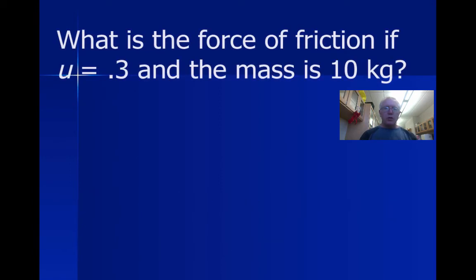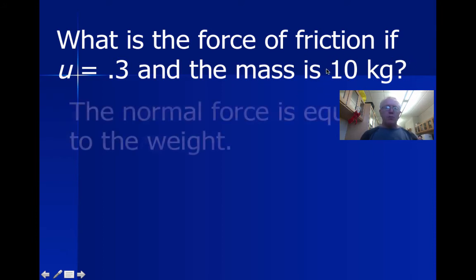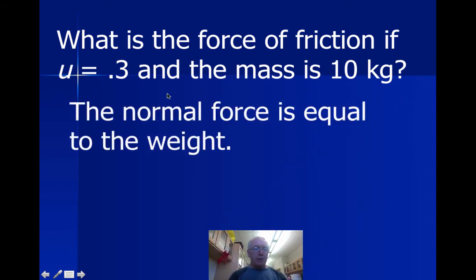All right, so what is the force of friction when mu is equal to 0.3 and the mass is 10 kilograms? Well, 10 kilograms is not the normal force, but you may remember that for our class, now this is for our physics class, the normal force is equal to the weight. In every example that I will give you, the normal force and the weight are going to be equal to each other, equal but in opposite directions. The free body diagram shows us the direction of the normal force and the weight, that they're in opposite directions, right? But they're equal in value for this class.